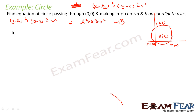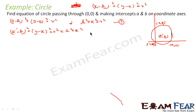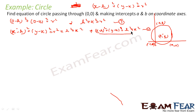Since r² = h² + k², I can substitute this into the circle equation to get (x - h)² + (y - k)² = h² + k². This eliminates the r term, so the equation is now written only in terms of h, k, x, and y. This is our working equation.